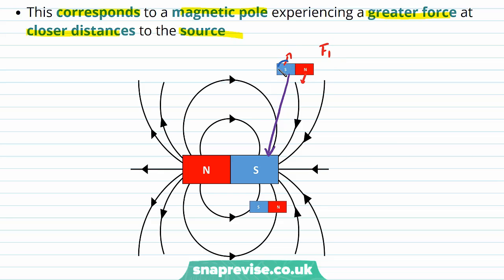And notice that the force on the south pole is in the opposite direction to the force on the north pole, because the south pole is repelled by this south pole and the north pole is attracted to it. Now let's consider this magnet, which is much closer to the source.